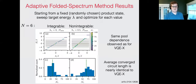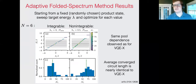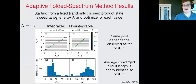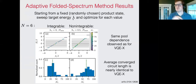That was adaptive VQEX using the variance as a cost function. Now, if we actually want to target a certain energy, we need to use the folded spectrum method. What we do here is start from a fixed randomly chosen product state and sweep the target energy λ in discrete steps over the whole bandwidth of energies — from one end of the spectrum to the other.